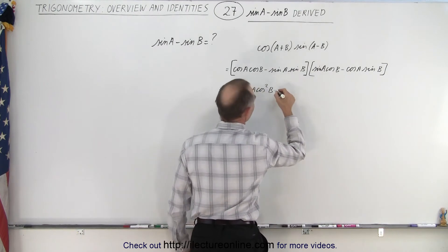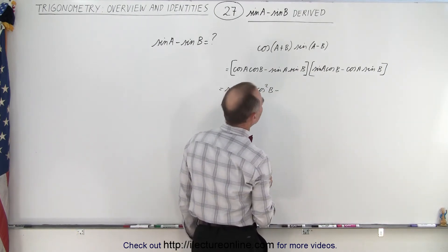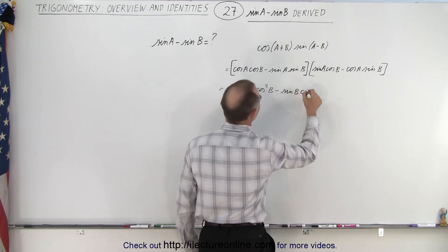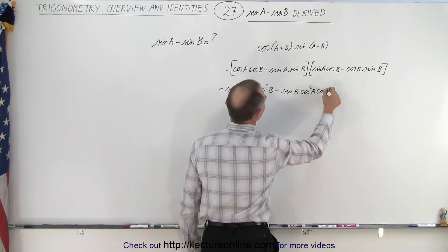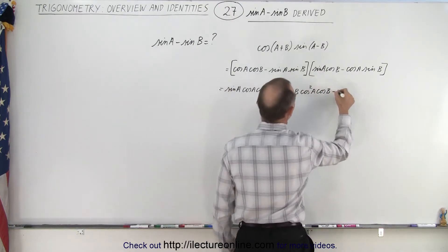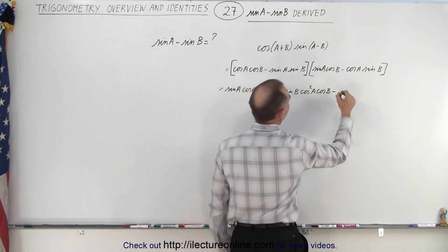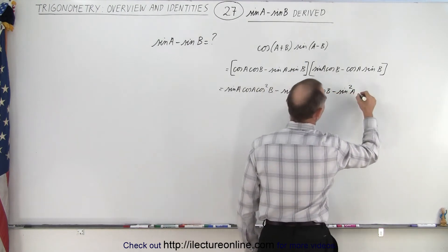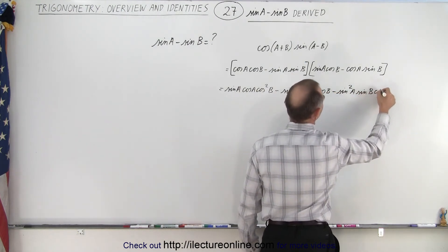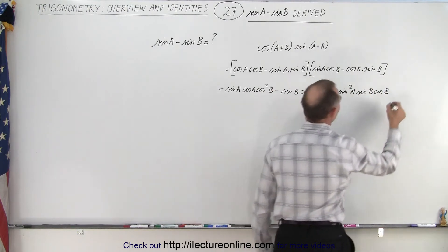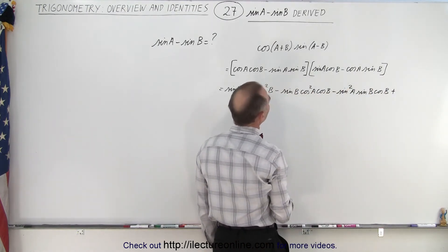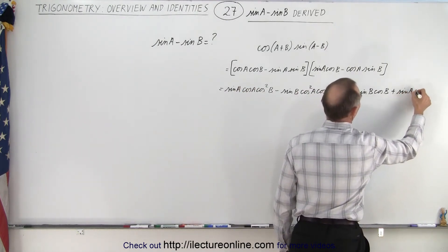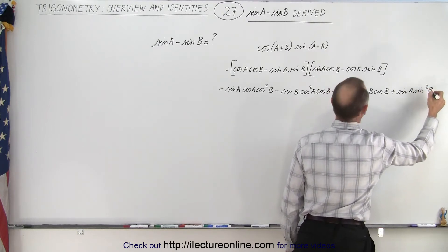This multiplied times that gives us minus sine b cosine squared a cosine b. Now this times this gives us minus sine squared a sine b cosine b. And finally multiplying those two gives us plus sine a sine squared b cosine a.